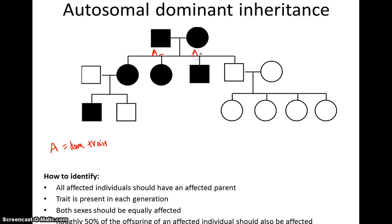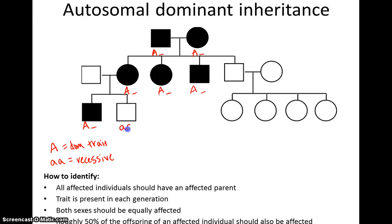Affected individuals are going to be capital A something. We also know that all individuals without the trait — since this is autosomal dominant and you only need one copy to express it — must be little a, little a, or recessive. If the dominant is present it's expressed, so any unaffected individual must be homozygous recessive. I already have most of the pedigree completed.